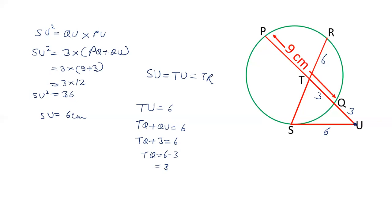So we have got the values of SU, QU, and T. We already have the value of RT. Let's find out the value of PT. PT is PQ minus QT. PQ is 9, QT is 3, so PT is 6.